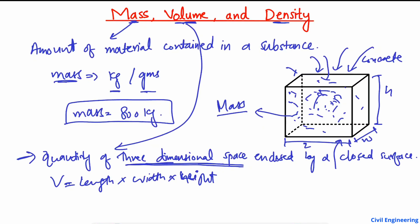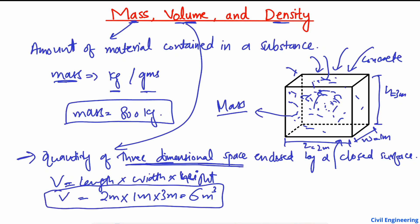Volume is length × width × height. When we pour concrete into this object and fill it completely, let's suppose the length is 2 meters, the width is 1 meter, and the height is 3 meters. So we get 2 × 1 × 3 = 6 cubic meters. The volume of this concrete is 6 cubic meters.